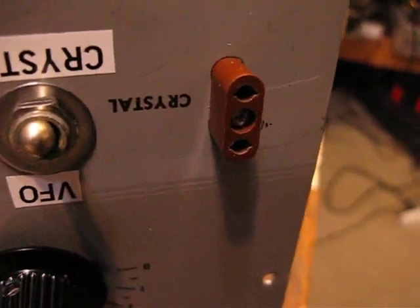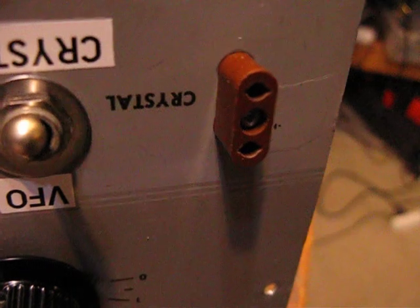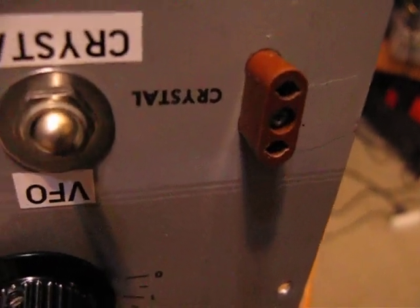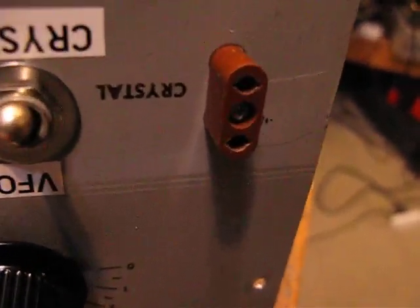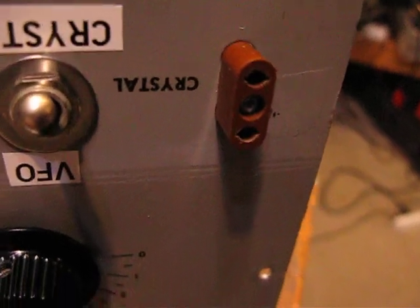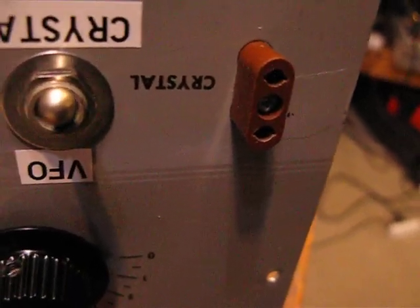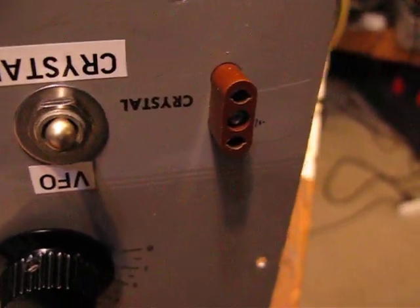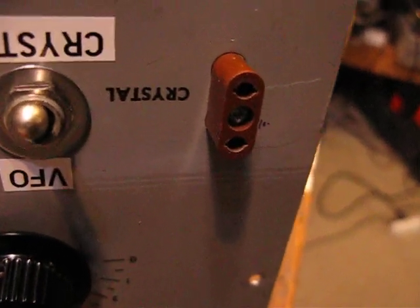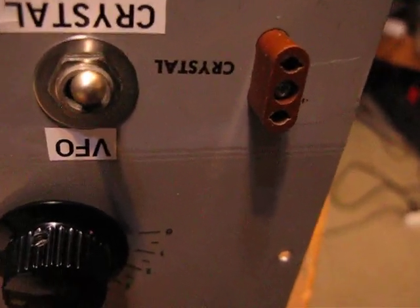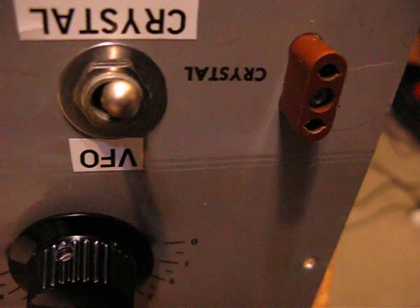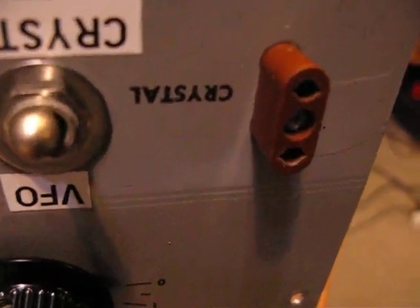The oscillator, the 6AG7, took off and oscillated and I thought it's getting feedback from someplace and it's oscillating without the crystal. That's not good, it shows instability, it's not good engineering practice to have one that does that and I could accidentally push on the key without the crystal and transmit out of band.